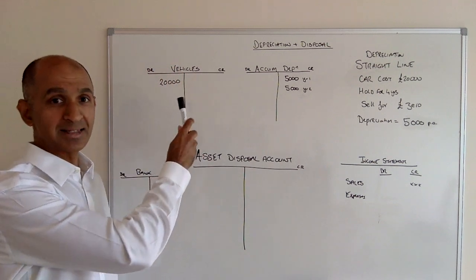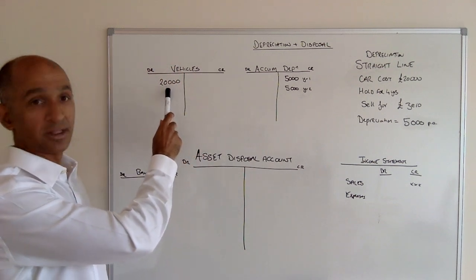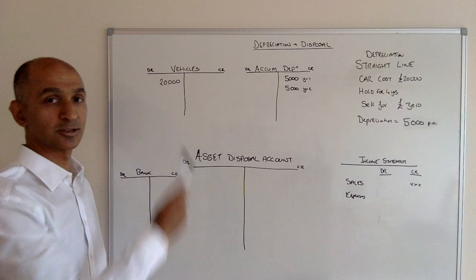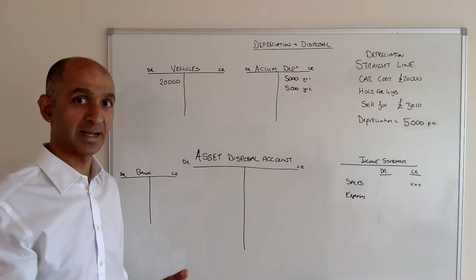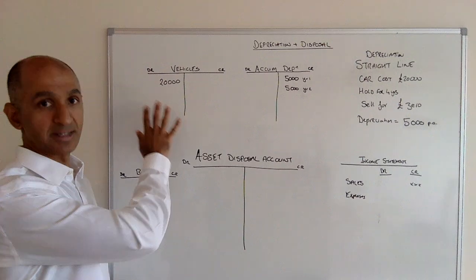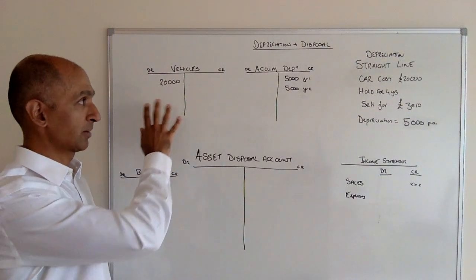In the asset account, there's going to be a vehicle of £20,000 on the debit side. We've credited bank, paid cash for it, and there's the vehicle sitting as an asset when it was purchased.